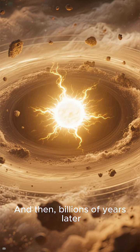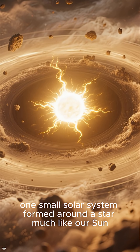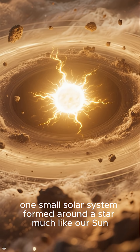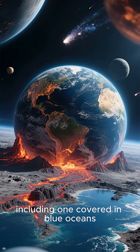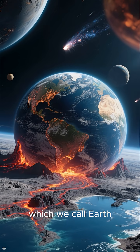And then, billions of years later, one small solar system formed around a star much like our sun. Planets were born, including one covered in blue oceans, which we call Earth.